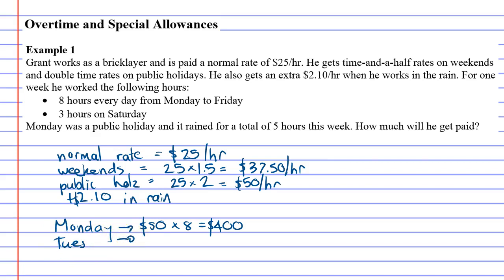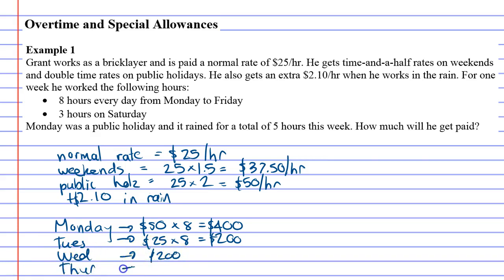Sometimes it helps to go day by day. On Tuesday he worked eight hours as well, and on Tuesday he only got $25 an hour, so Tuesday he got $200. Wednesday he got $200, Thursday he got $200, and Friday he got $200 — during the week he was working eight hours a day at the normal rate.